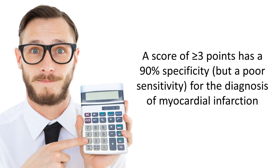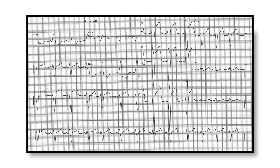Having looked for evidence of these three Sgarbossa criteria, we add up the total points scored. If the patient has a score of at least three points, this indicates a 90% specificity but a poor sensitivity for diagnosis of myocardial infarction. In other words, the Sgarbossa criteria are good for ruling in a myocardial infarction but not so good at ruling it out. Applying the Sgarbossa criteria to this ECG, the patient scores two points because of very marked ST segment elevation in leads with negative QRS complexes — at least five millimetres — but they do not have ST segment depression in the anterior leads, nor ST segment elevation in leads with positive QRS complexes. So their total Sgarbossa score is just two, and they do not meet the criteria for acute myocardial infarction.